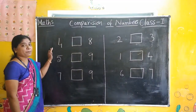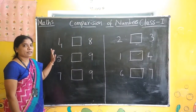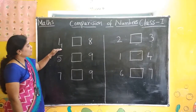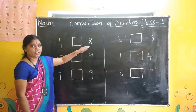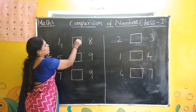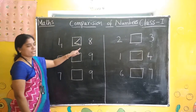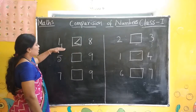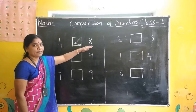Now we have some numbers. We will compare these numbers and put the symbol — greater than, less than, or is equal to. First one: 4, 8. Which one is the biggest one? 8. So we have to open the mouth towards the biggest number. This is less than symbol. 4 is less than 8.